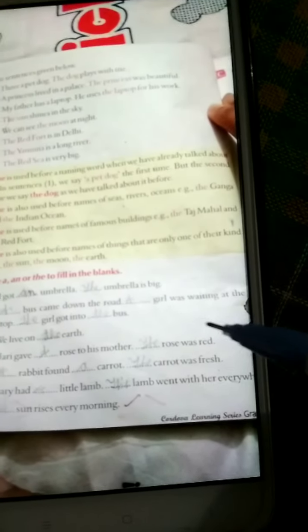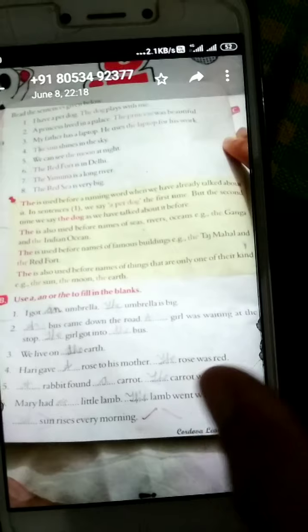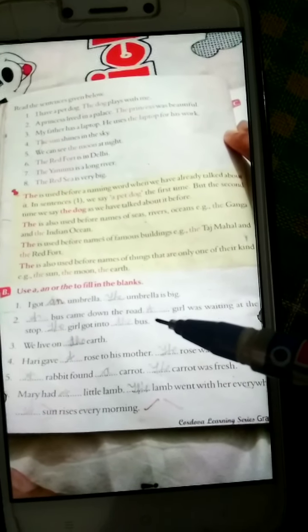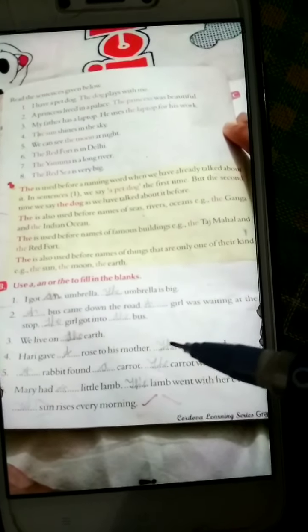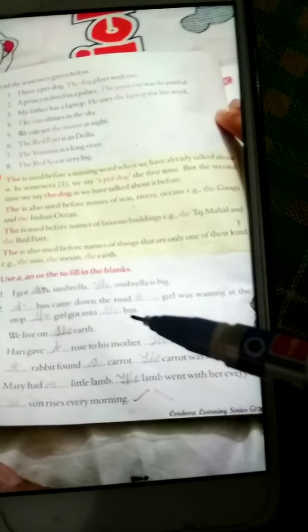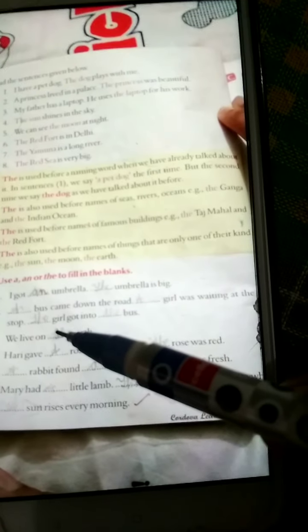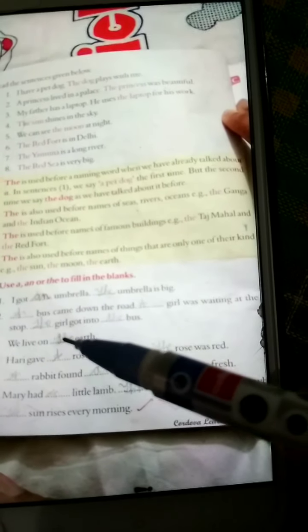Dash girl was waiting at the stop. A girl, girl sound, okay, 'g' sound, so we will write here a girl was waiting at the stop. Dash girl got into bus. Yeh jo pehle bus ki baat hui, phir se bus ki baat ho rahi hai, phir se girl ki baat ho rahi hai, so we will write here 'the'. The girl got into the bus.